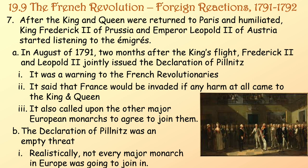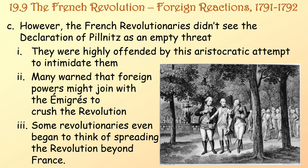After the king and queen were returned to Paris in that humiliating episode, King Frederick II of Prussia and Emperor Leopold II of Austria started listening to the émigrés. In August of 1791, two months after the king's flight, Frederick II and Leopold II jointly issued the Declaration of Pillnitz — a warning to the French revolutionaries that France would be invaded if any harm came to the king and queen. It also called upon other major European monarchs to agree to join them. The Declaration of Pillnitz was actually an empty threat, as realistically not every major monarch in Europe was going to join in. However, the French revolutionaries did not see it as an empty threat — they were highly offended by this aristocratic attempt to intimidate them.